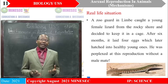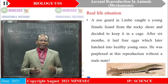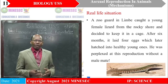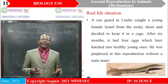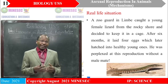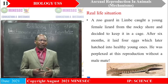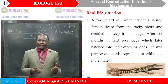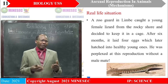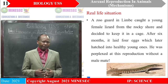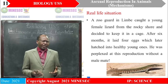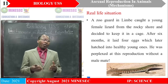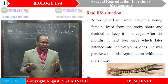How can this lesson help us in everyday life? Here is a theoretical situation: a zoo guard in Limbe caught a young female lizard from the rocky shore and decided to keep it in a cage. But after six months, this lizard laid four eggs which later hatched into healthy young ones. He was perplexed that these eggs had hatched when there was no male counterpart to have mated with it. Let's see how our lesson is going to help us explain how eggs which were not fertilized could hatch and give rise to young lizards.